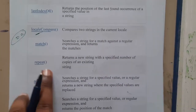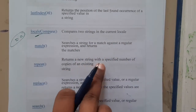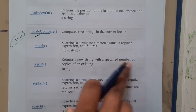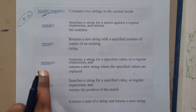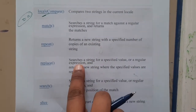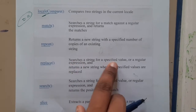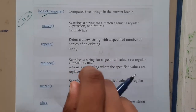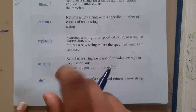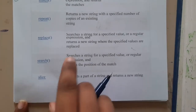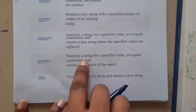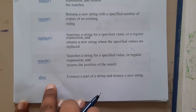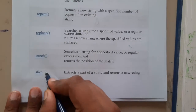`repeat` returns a string with a specific number of copies of an existing string. `replace` searches for a value and replaces it with a new one, then returns the updated string. `search` helps in searching within a string. `slice` breaks the string — make sure you are writing the correct brackets.